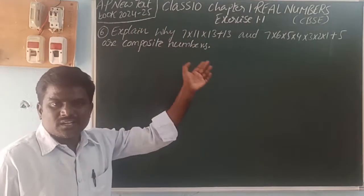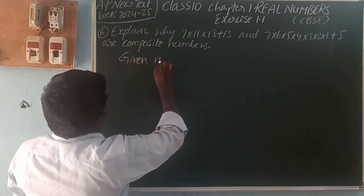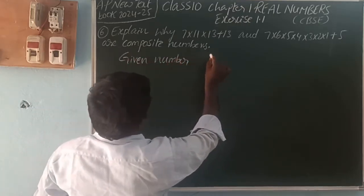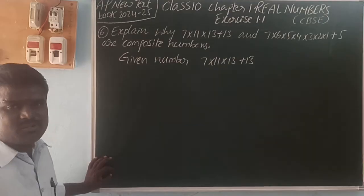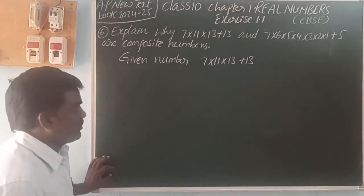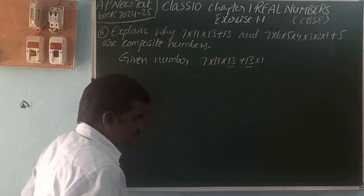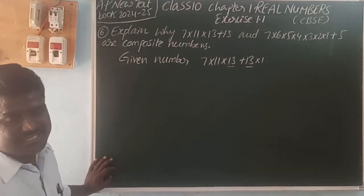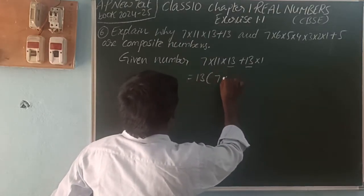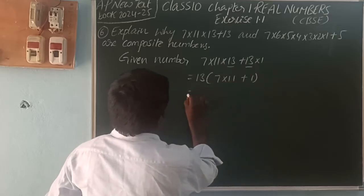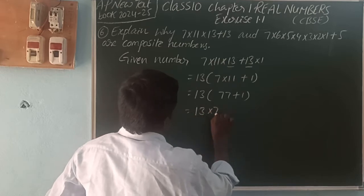So here, explain why these two are composite numbers. For the given number 7×11×13 + 13: you can show it has more than 2 multiples. Here, 13 — you can write as 13×1. So we use the distributive property: A×B + A×C = A(B + C). The common factor is 13, so what remains is 7×11 + 1. That gives us 13(77 + 1) = 13×78.